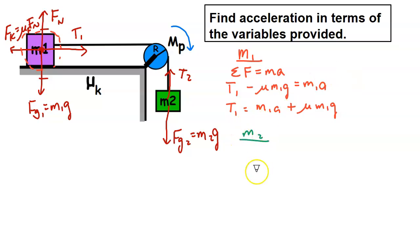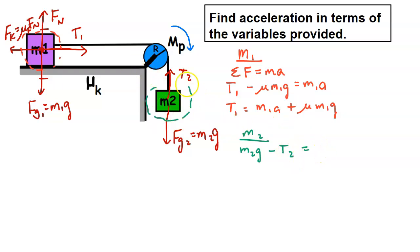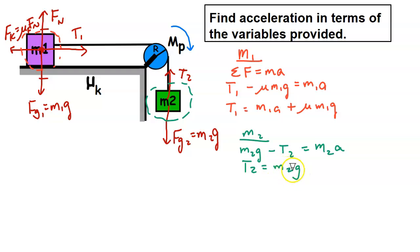For m2, Newton's second law — taking downward as positive — gives: m2g − t2 = m2·a. Solving for t2: t2 = m2g − m2·a. This will also be substituted in when we analyze the pulley.